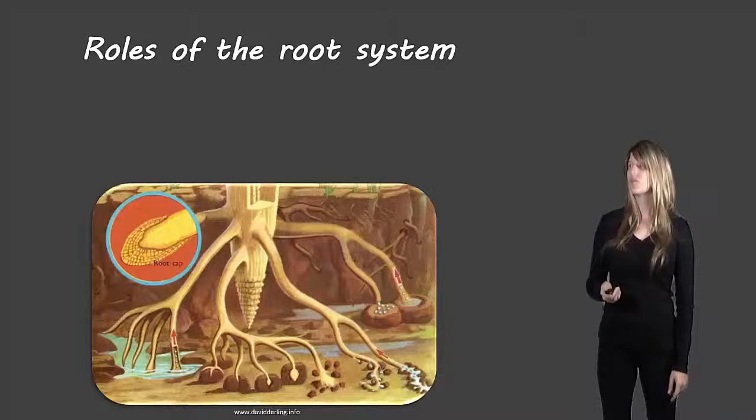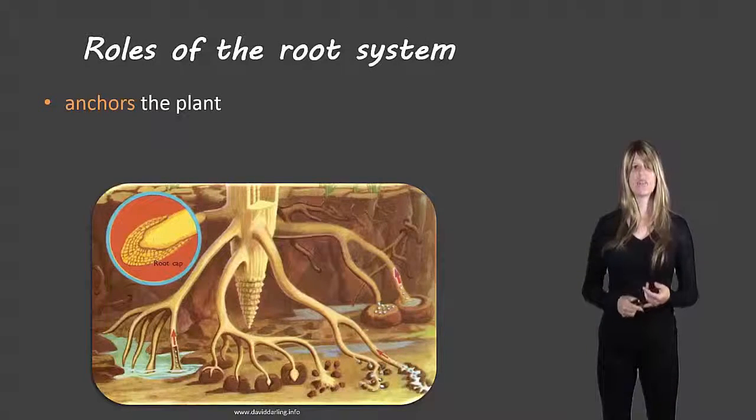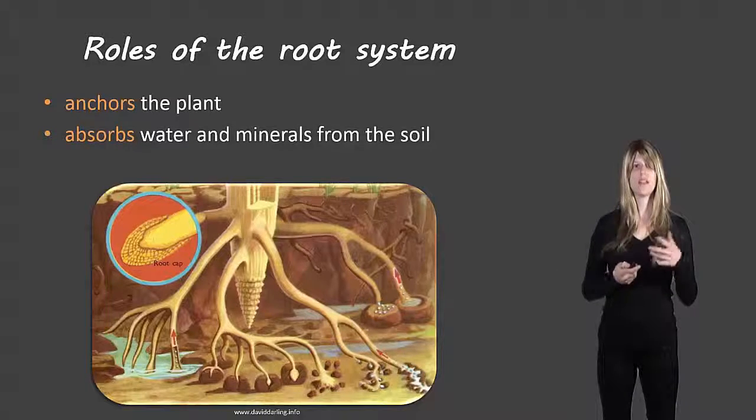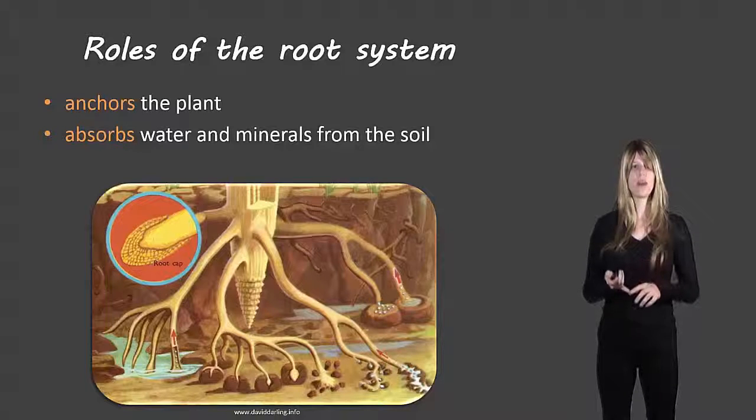So what are the roles of the root system? Well it anchors the plant into the ground. It absorbs water and minerals from the soil and these are used well for one thing for photosynthesis and also because plant cells need water and they need minerals just to survive and to exist.